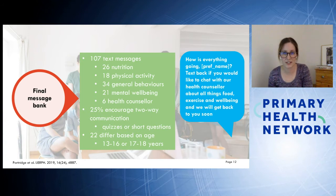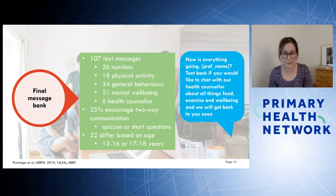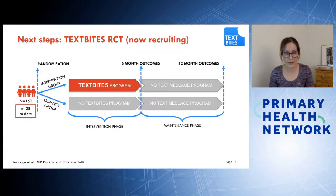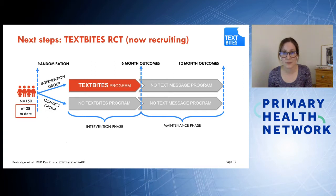Here's an example message from the health counselor: 'How is everything going? Text back if you'd like to chat.' This gives them the opportunity to think about what they have on that week, send a time that suits them, and receive a call. We're currently testing this in a randomised control trial seeking 150 young people, with 38 recruited to date. Young people are randomised to intervention or control groups for a six-month program, followed up again at 12 months, after which the control group is offered the full program.